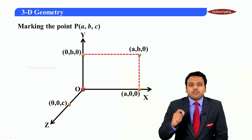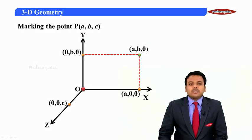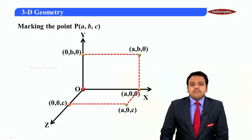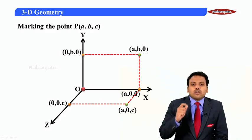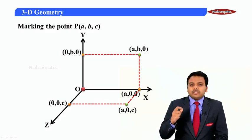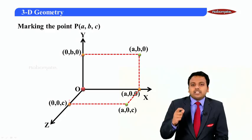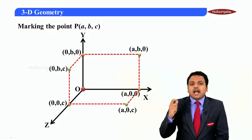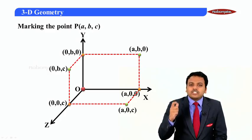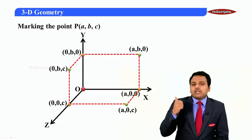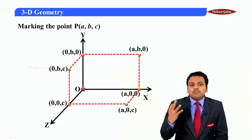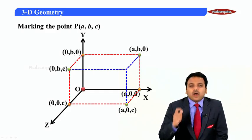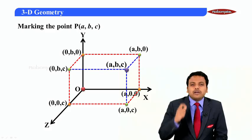From the x-axis and y-axis, dropping two perpendiculars gives us (a, b, 0). Similarly, dropping perpendiculars from the x-axis and z-axis gives (a, 0, c), and from the remaining two axes they meet at (0, b, c). Now to complete the cuboid, we draw three more lines that meet at our required point (a, b, c).